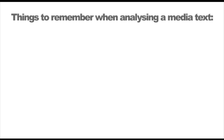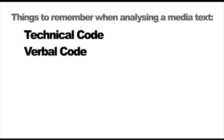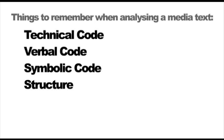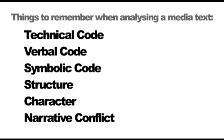When analysing a narrative, you must take into account technical code, verbal code, symbolic code, structure, character and narrative conflict. So that's six things to remember.